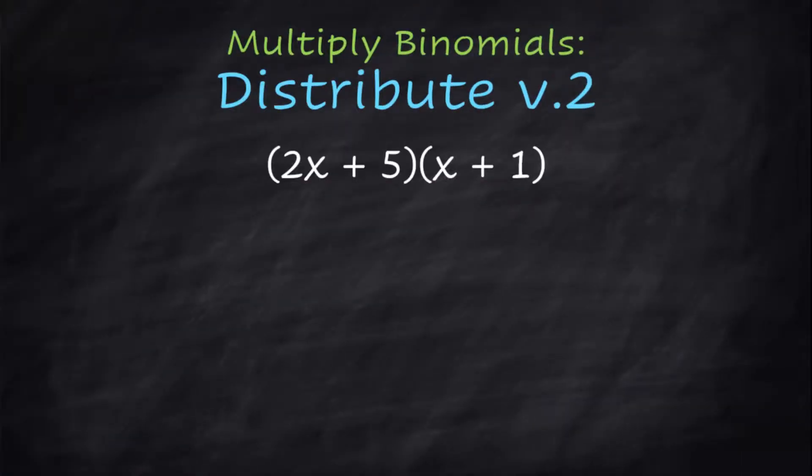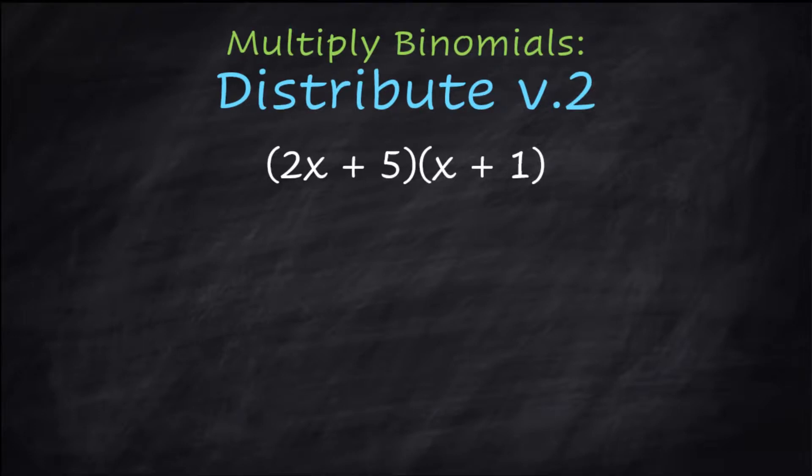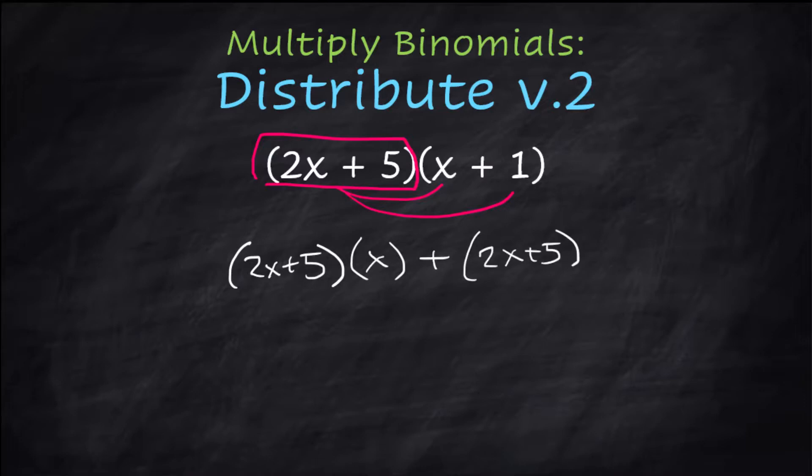And here is the second way to use distributive property. Now for somebody else, their brain might be thinking, I'm going to take this whole thing and multiply it times each one of these terms. So here's what that's going to look like. You have that 2x plus 5 that you're going to multiply times this x plus that 2x plus 5 times this 1.